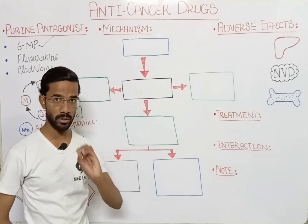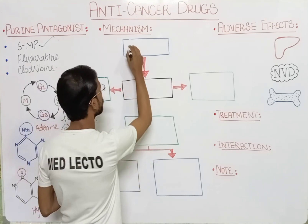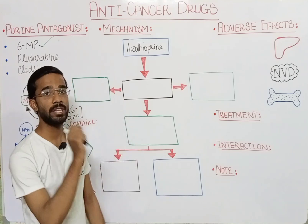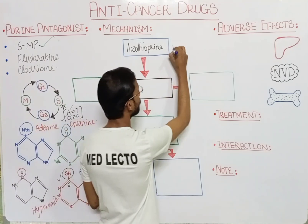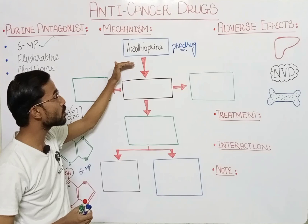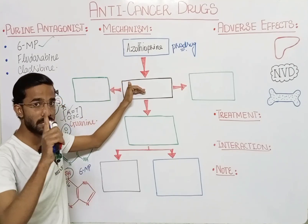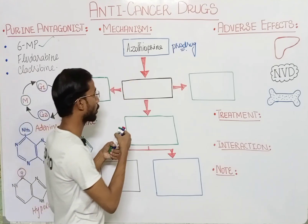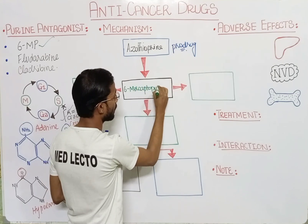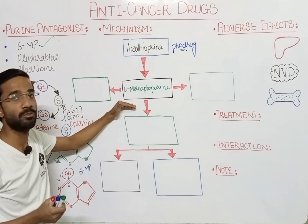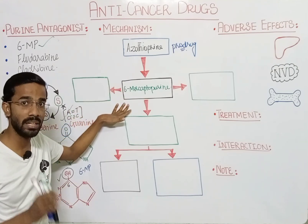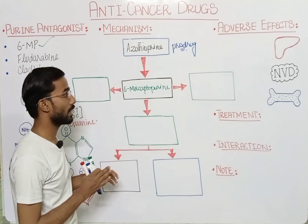First of all, an important drug is azathioprine. Azathioprine is actually a prodrug — it is the inactive form of the drug. Azathioprine will convert into 6-mercaptopurine, which is the active form of the drug. When we take azathioprine, it converts into 6-mercaptopurine in our body, and then it takes action.